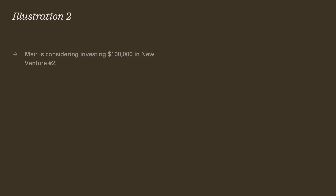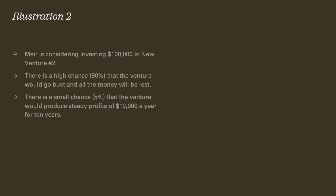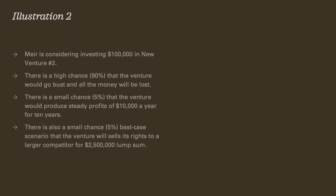In illustration two, we're going to use similar facts. Meyer is considering investing $100,000 in new venture number two. For new venture two, there's a high chance — 90% — that the venture is going to go bust. This is a really risky enterprise. There's a small chance, only 5%, the venture will produce steady profits. Maybe it's not built for steady profits — it's built for sale. So there's a small chance this company will sell itself to a large competitor for $2.5 million. Much higher chance of total failure, but if the M&A event happens, it's a much bigger reward.